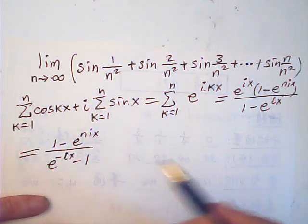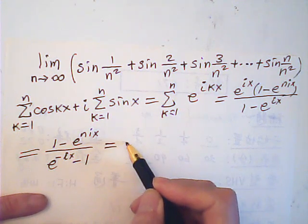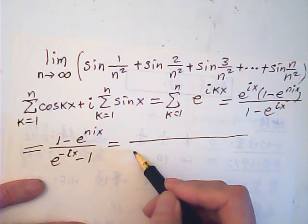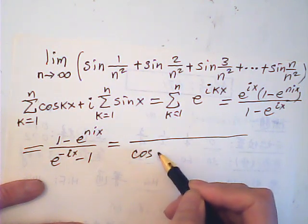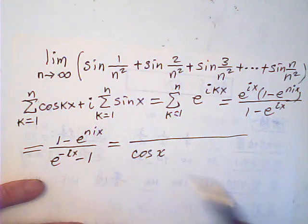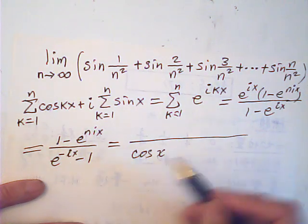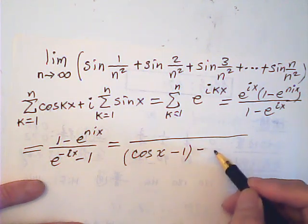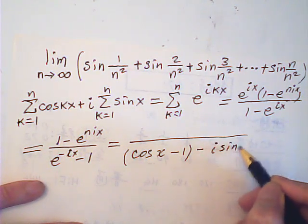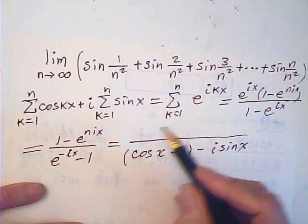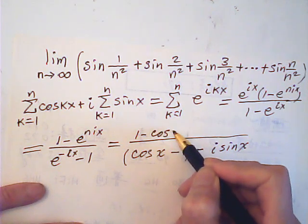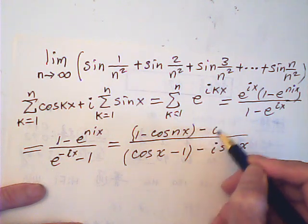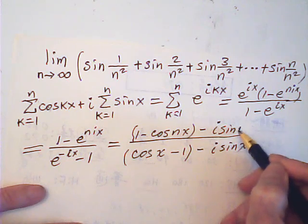Now I use Euler's formula again. The denominator becomes cosine x minus 1 minus i sine x — that is the real part and imaginary part. On top it will be 1 minus cosine nx — that's the real part — minus i sine nx.